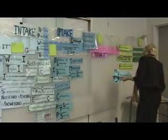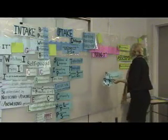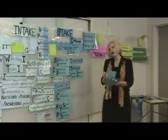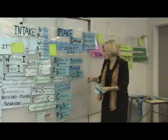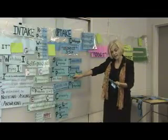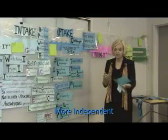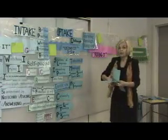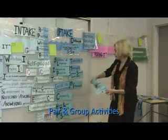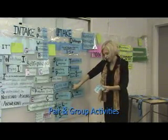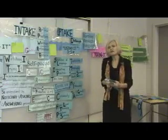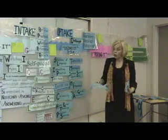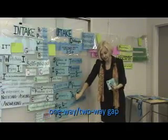We want to be thinking about this stage of BSLIM in terms of providing less support to students, or of them becoming more independent users of the language. This means that we still want to see pair and group activities — it's absolutely imperative. A good way to think about structuring activities is to think about one-way or two-way gap activities.